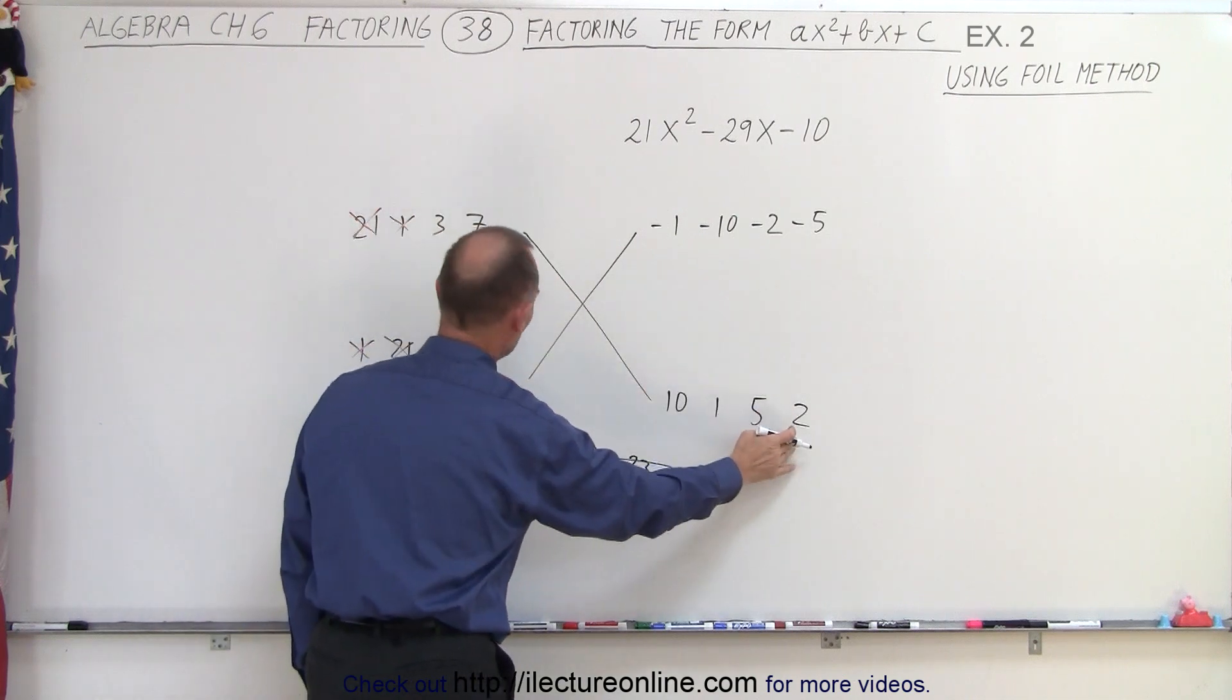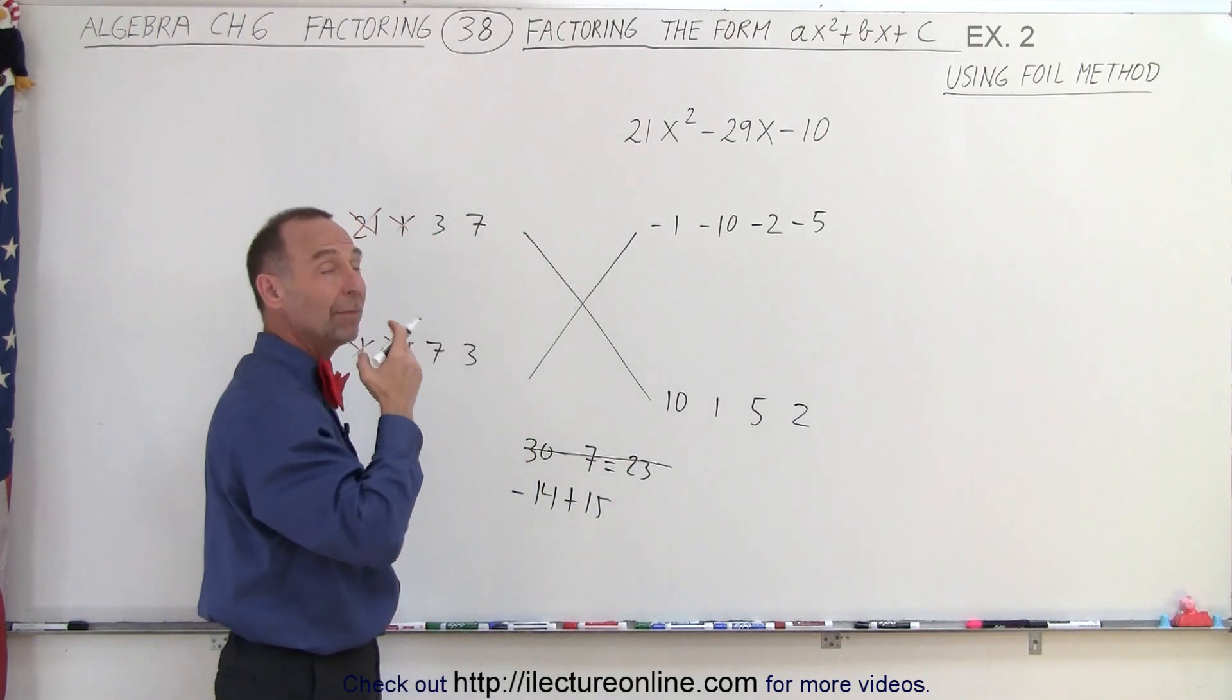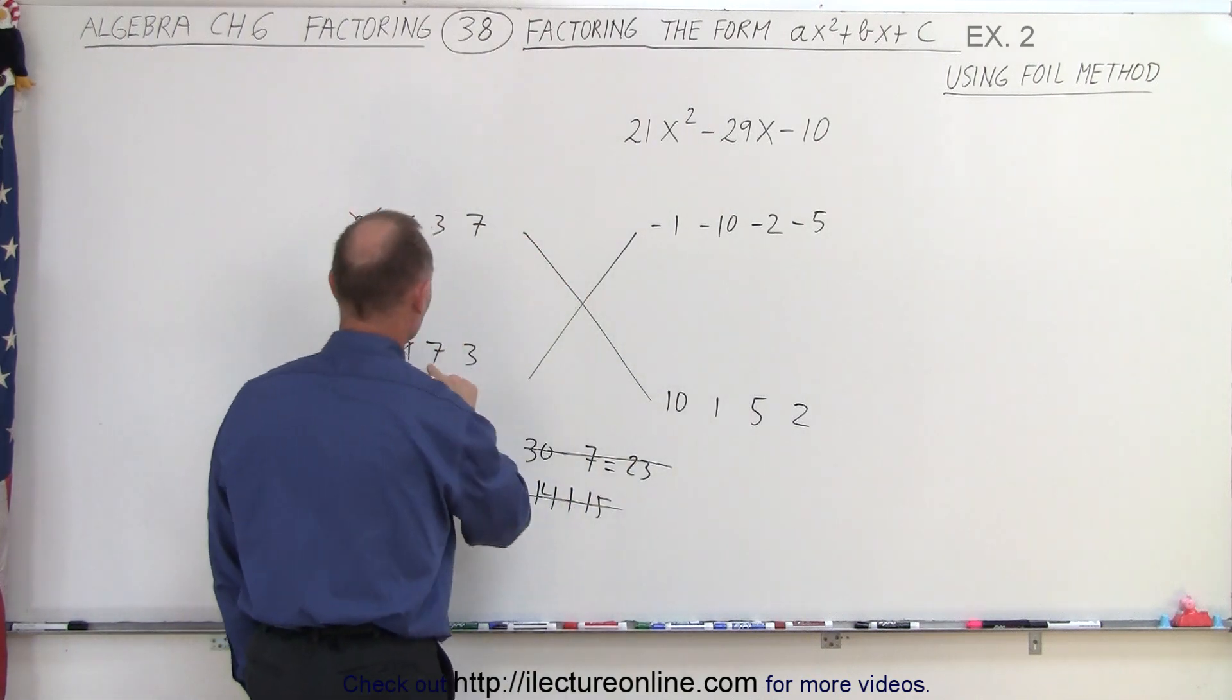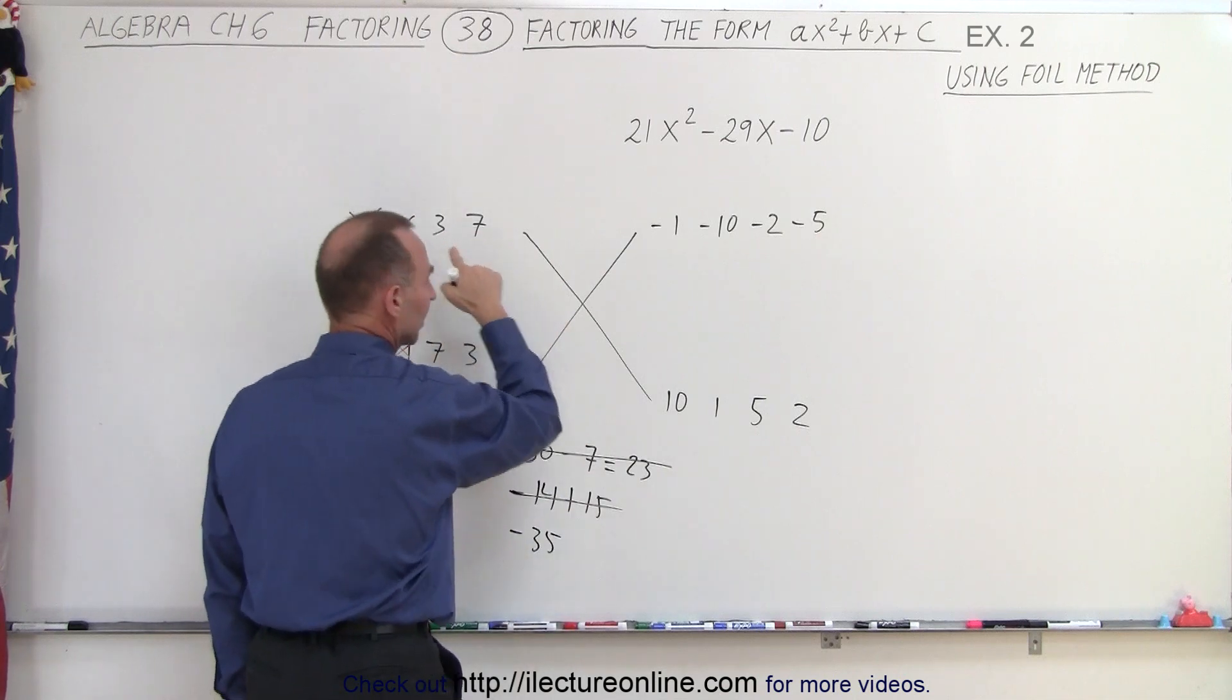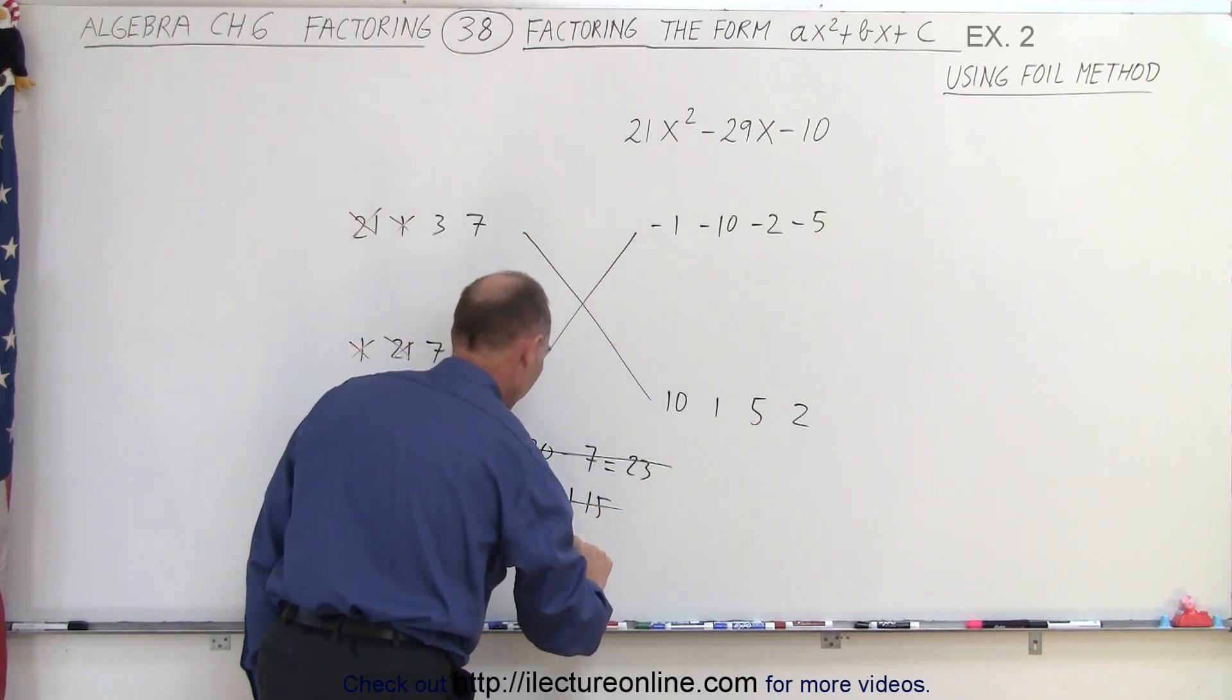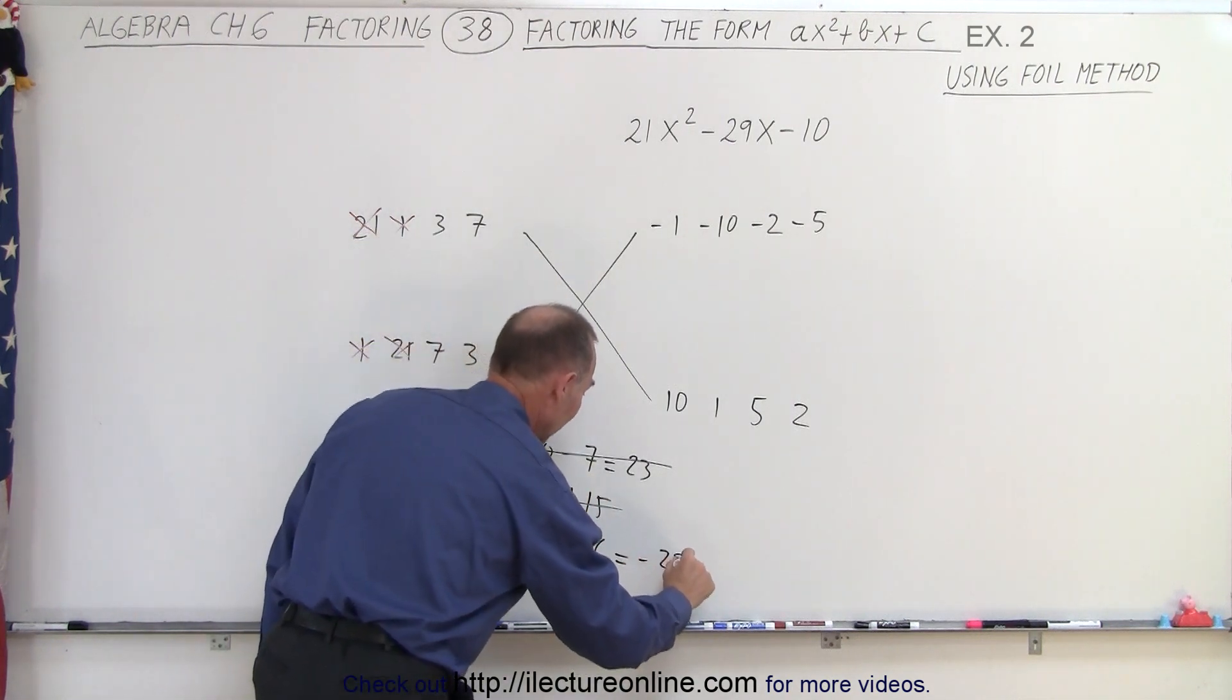And 3 times 2 and 7 times negative 5. Let's see, maybe it does. Let's try that. 7 times negative 5 is negative 35, and 3 times a positive 2 is plus 6. And whoa, bingo! We add them together, and we get negative 29.